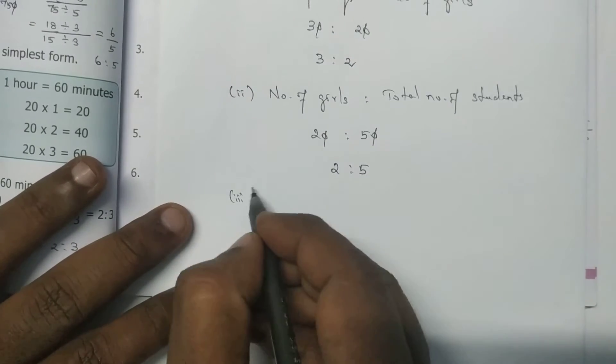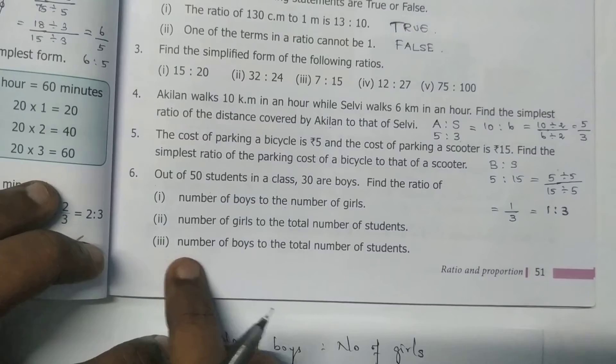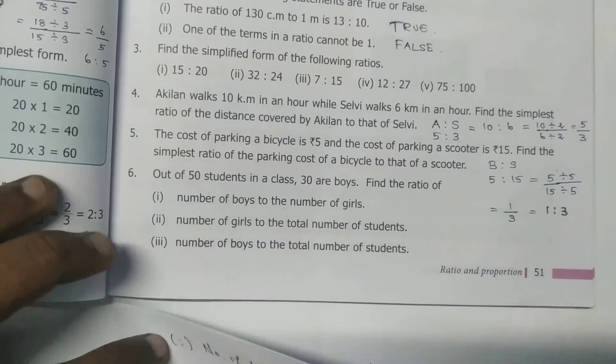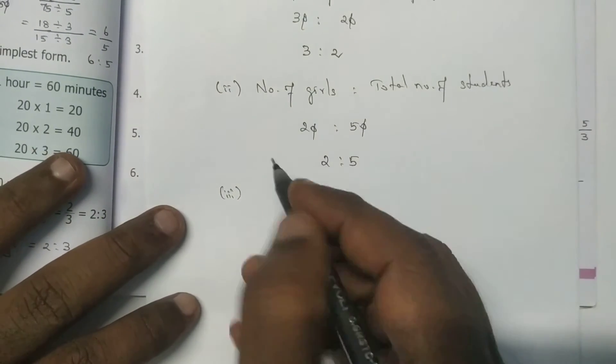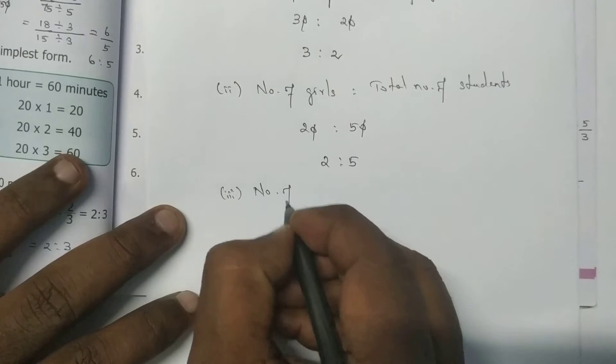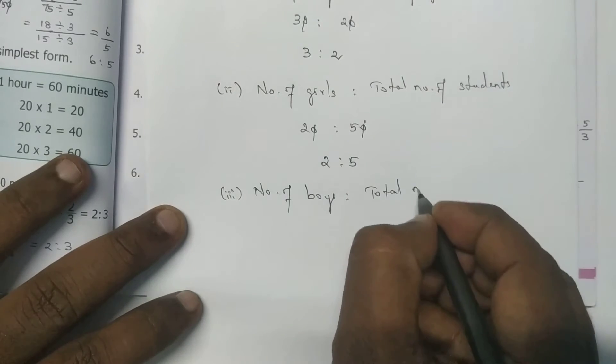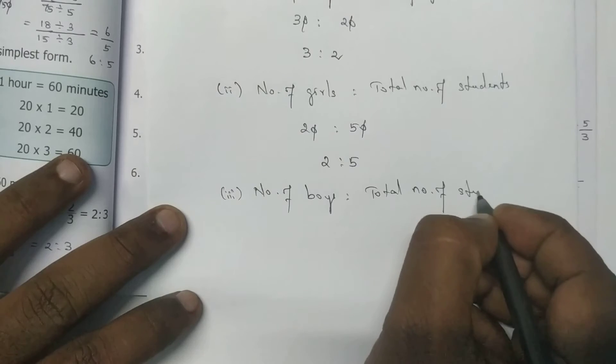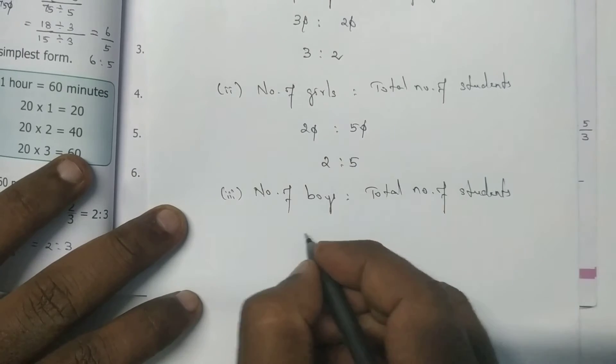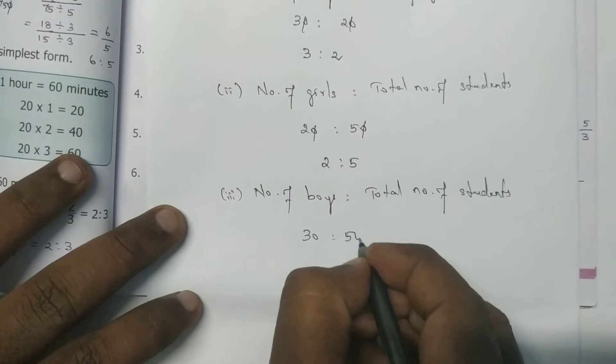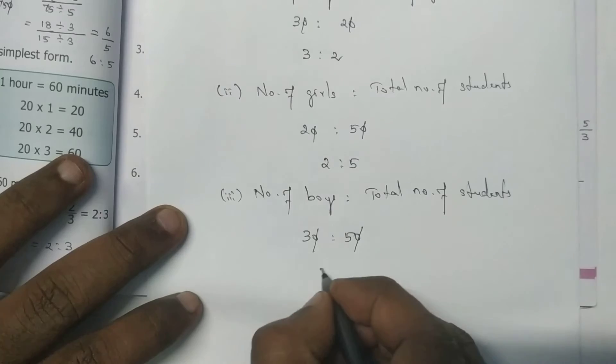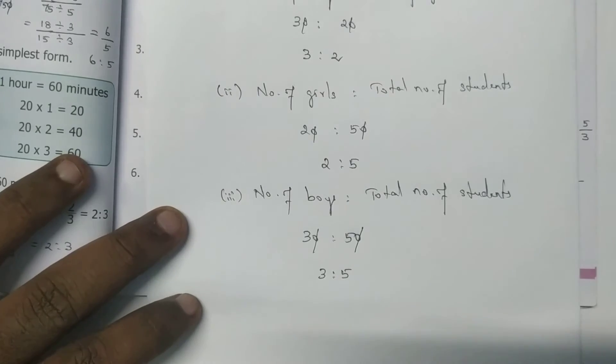Third one: number of boys to the total number of students. So number of boys, total number of students. Number of boys 30, total 50. Zero to zero, cancel it. 3 is to 5.